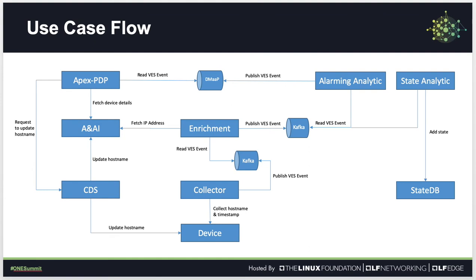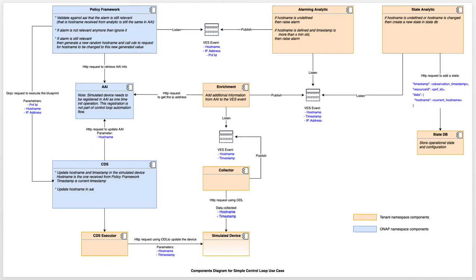APEX PDP will read the VES alarm and trigger the respective logic to fetch the device details from A&AI to verify if the host name provided by analytic is the same as the one in A&AI. In case the host names don't match, the execution of the alarm is terminated and a notification is sent on DMAP. If the host names are matching, the corresponding logic is triggered to generate a new host name, and a request to update the host name is made to CDS via gRPC. Upon receiving the request, CDS will update the host name in the device and then in A&AI.